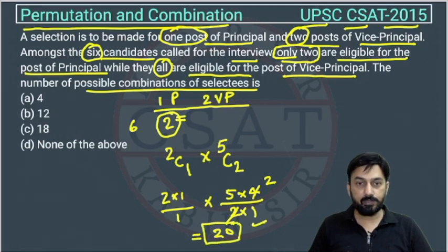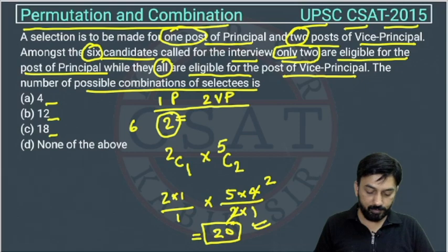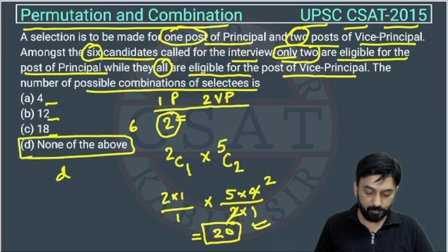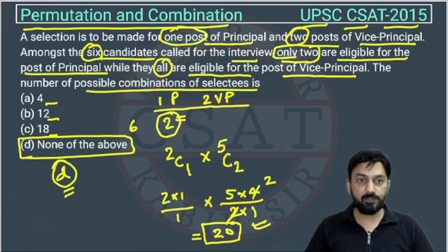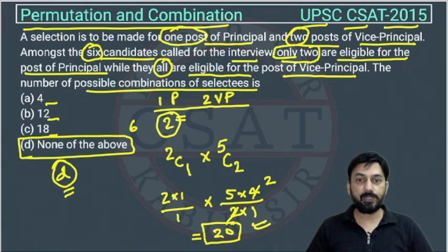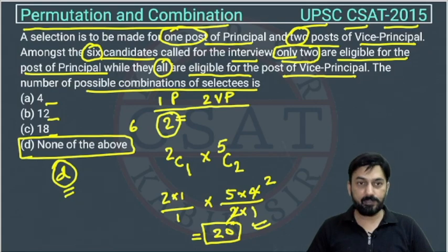So the answer to this problem is 20, which corresponds to option T — none of the above. Many students, when they see 'none of the above' as their answer, think they are making a mistake. But this is a very common perception — the correct answer here is indeed option T.